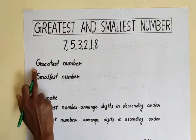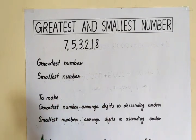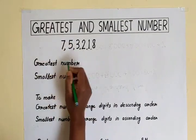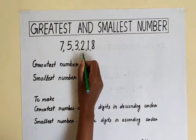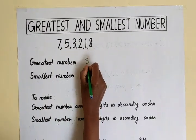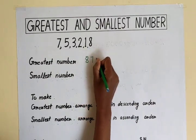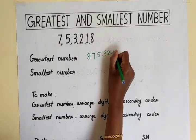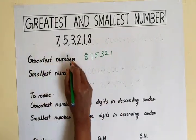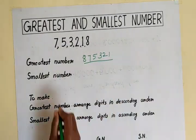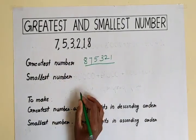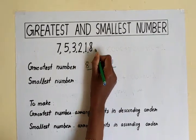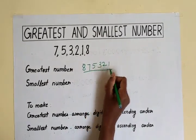First, how to write the greatest number? For writing the greatest number, find the greatest digit among these. What is the greatest digit among these? 8. The next is 7, next 5, next 3, next smallest 2, next is 1. So this is the greatest number. For getting the greatest number, I arrange these digits in descending order — that means from big to small, descending order.